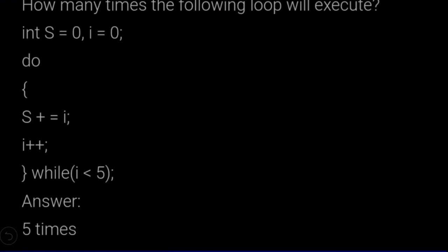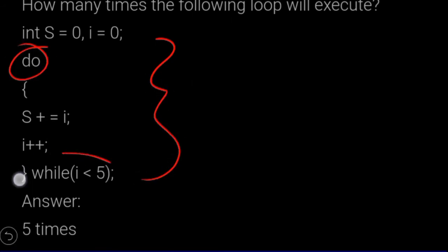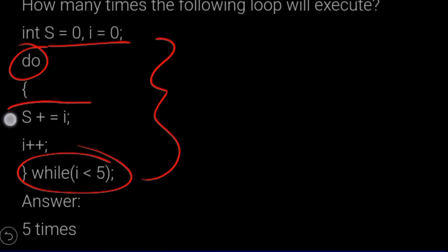How many times will the following loop execute? In this program, we have a do-while loop. We initialize s equal to 0 and i equal to 0. Then i is equal to s plus i, followed by i plus plus.